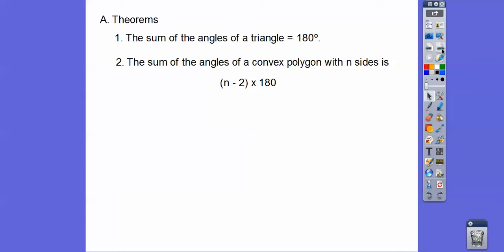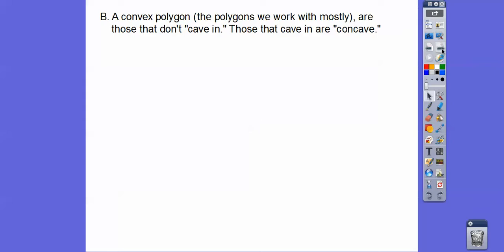What is a convex polygon? Convex polygons are the ones we work with most of the time, those that don't cave in. If they cave in, they're called concave polygons. Here are some convex polygons. This looks like a pentagon right here. This has 1, 2, 3, 4, 5, 6, 7 sides - this is a heptagon. These are both convex because they don't cave in.